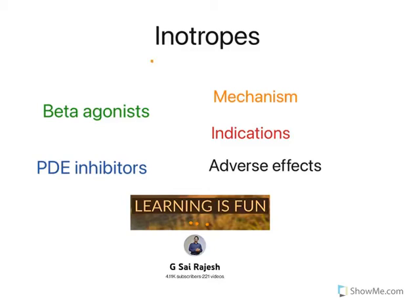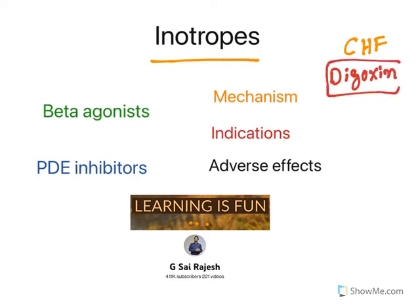Hello everyone, welcome to the video on inotropic agents. This is part of congestive heart failure treatment. In the previous class I explained about digoxin or digitalis glycoside, which is used to treat congestive heart failure. The remaining inotropes are beta agonists and phosphodiesterase inhibitors. In this video we will see the mechanism, indications, and adverse effects of these two inotropic agents.